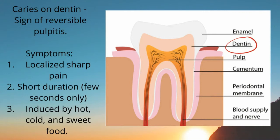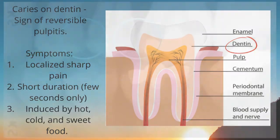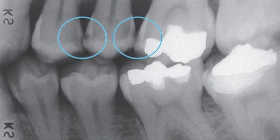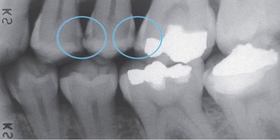The reason it is called reversible is that once you treat the cause — which is the caries — the pulp will return back to normal, it will not be inflamed anymore and the pain will subside. Here is a bitewing X-ray in order to confirm the patient is having reversible pulpitis.